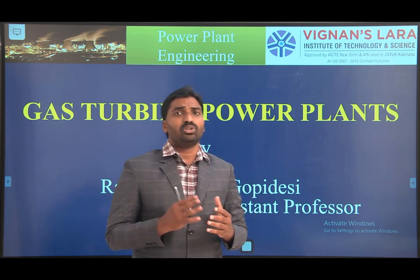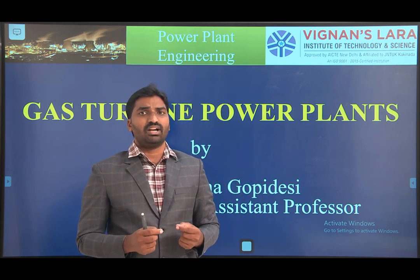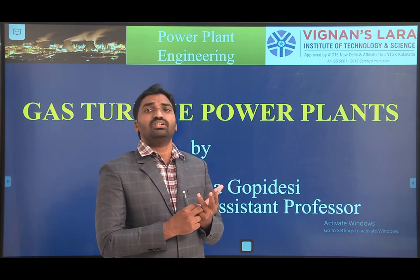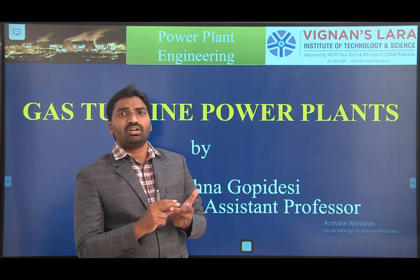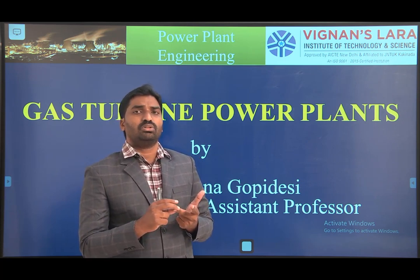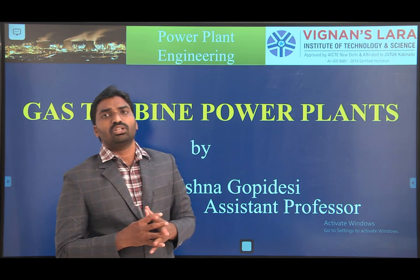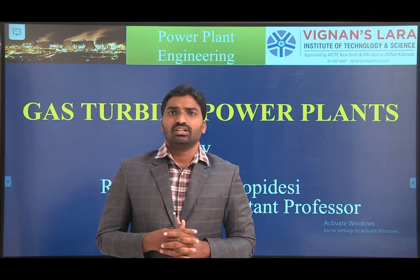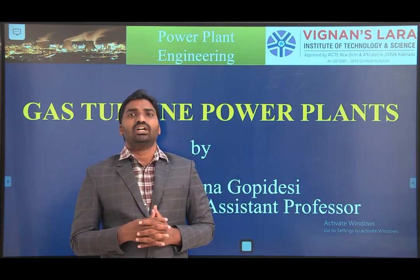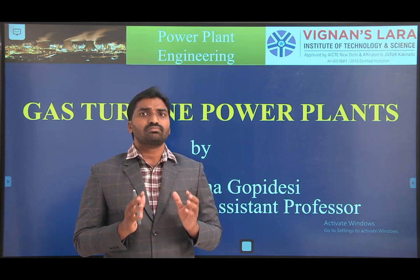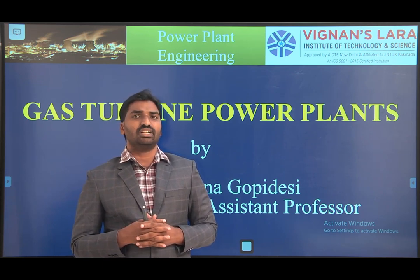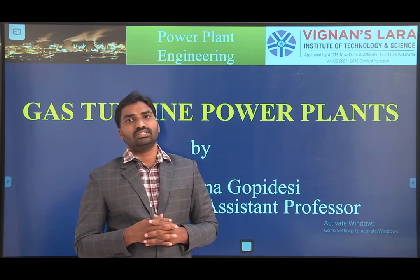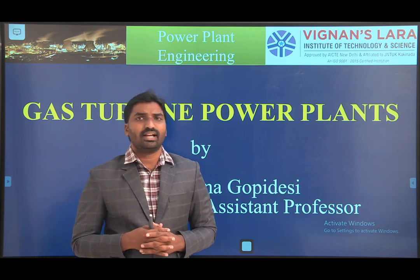The main important components of a gas turbine power plant are: first, the compressor; next, the combustor, which is the combustion chamber; and then connecting to the turbine. The working fluid in a gas turbine power plant is air — high temperature and high pressure air. The fuel used in gas turbine power plants is generally high octane fuels.